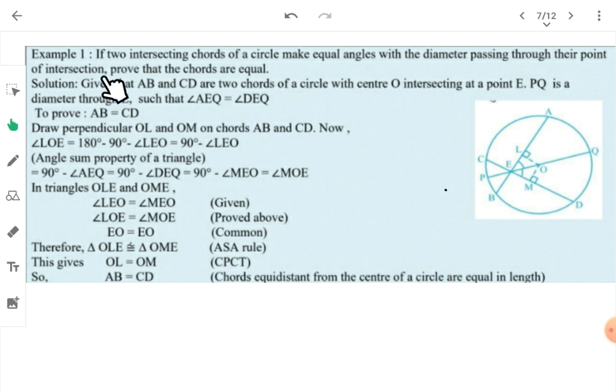Let's take an example. Example number 1: If two intersecting chords of a circle make equal angles with the diameter passing through the point of intersection, prove that the chords are equal. As you can see, chords AB and CD are bisecting. The diameter is drawn through the bisecting point, making equal angles with it.